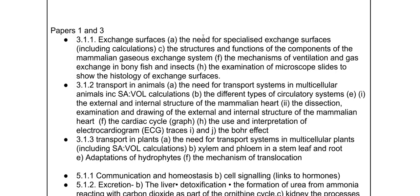For papers one and three, in exchange surfaces, this is where we first meet the need for a specialised exchange surface — linking into surface area to volume ratio calculations. In terms of the lungs, what hasn't been on for a while is the structure and function of the different components, including the cartilage, smooth muscle, elastic fibres, ciliated epithelial cells, and squamous epithelial cells in each component. They also haven't asked about ventilation of gas in fish and insects — recap those dissections and what microscope images of those tissues look like, including whether it's a TEM, SEM, or light microscope image.